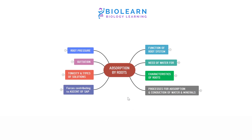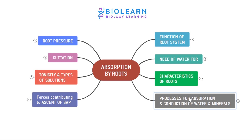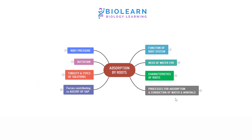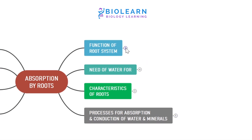The process of absorption by roots of plants is a complex process which involves various processes and forces. The main function of the root system is to absorb water and minerals from the soil and conduct them in the root system and later help it reach other parts of the plant.